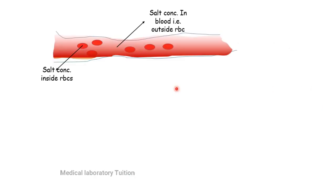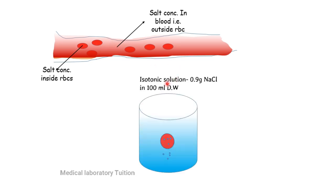Inside the blood vessel or in the body, we have a similar concentration in the blood and inside the RBC in terms of salt. If there is a change — increase or decrease — in the concentration of salt inside or outside the RBC, it is directly harmful for the RBC. An isotonic solution is a solution having 0.9 grams of NaCl in 100 ml.